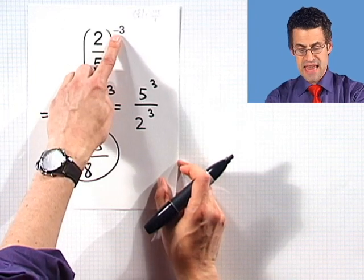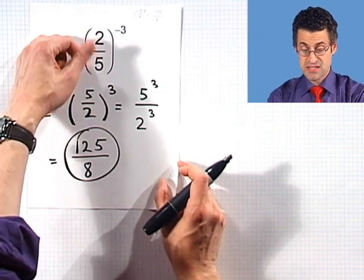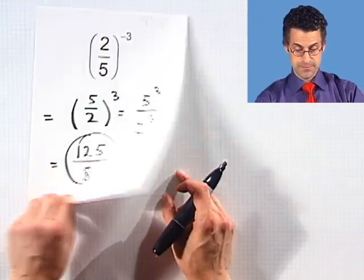Again, when you see a negative exponent, the important thing here is to remember you want to take the reciprocal of the base. Keep that in mind, and you'll never get confused with negative exponents.